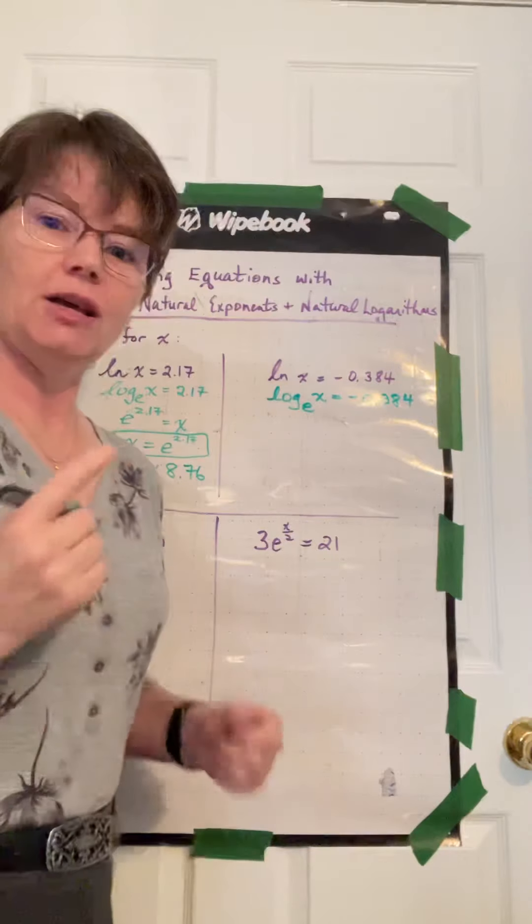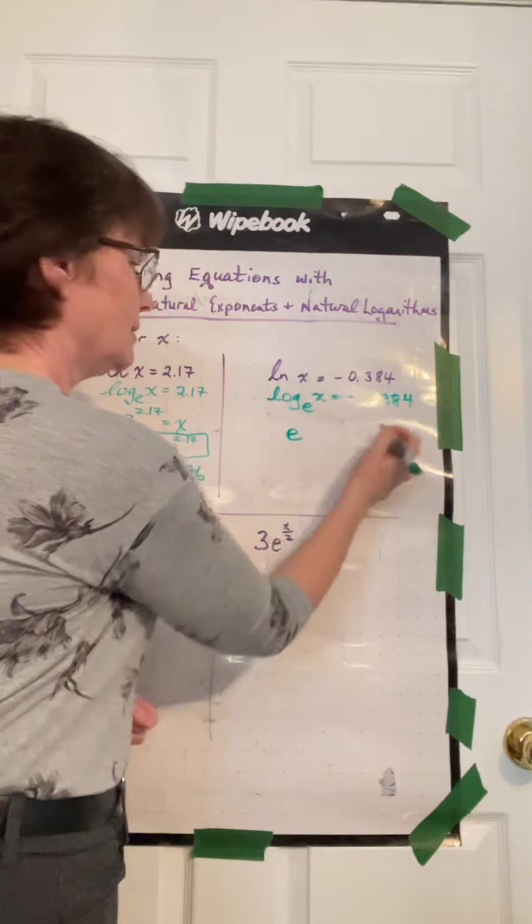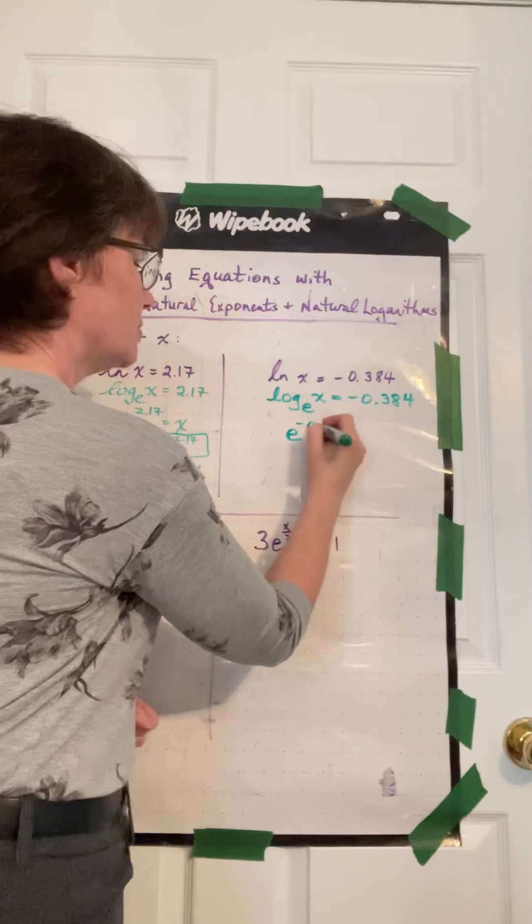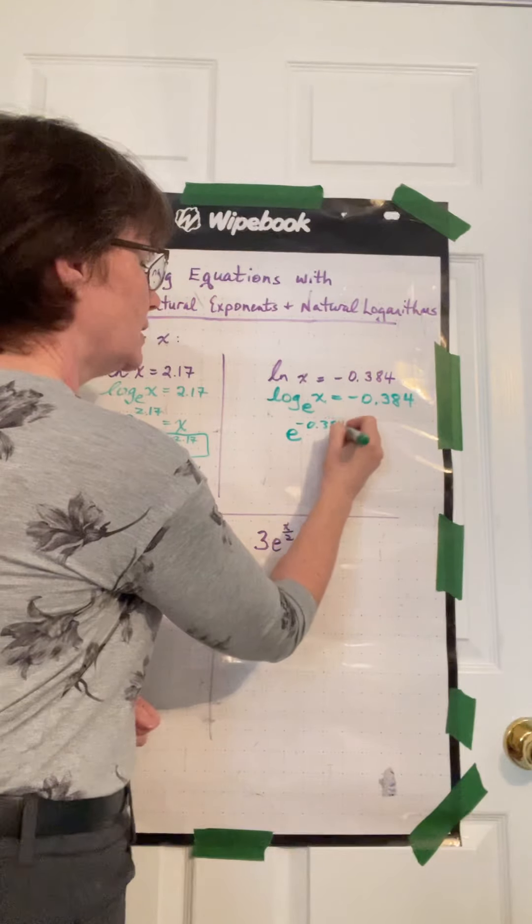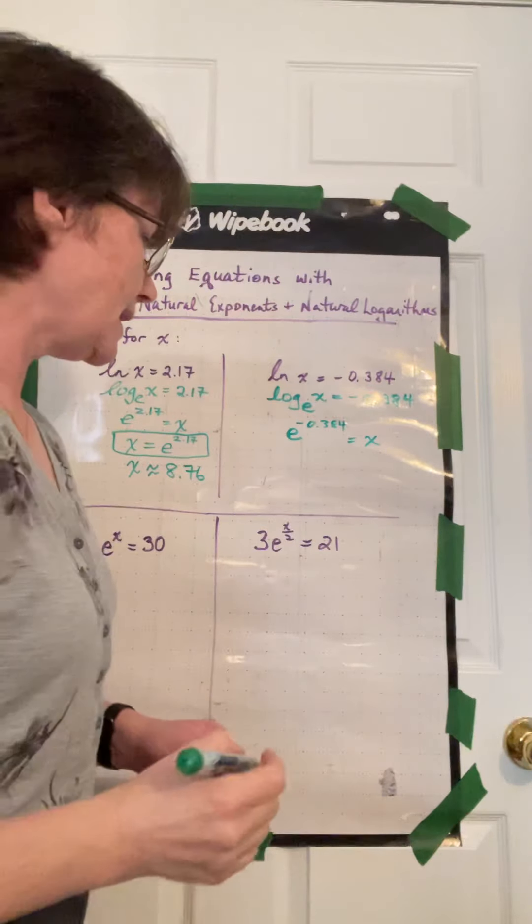And now we can change from a log statement to an exponent statement. So the base is e to the power of negative 0.384 equals what this argument was, which is x.